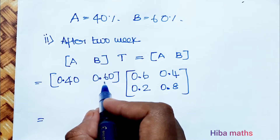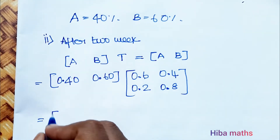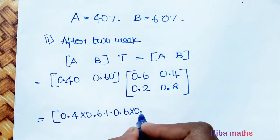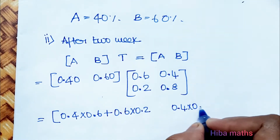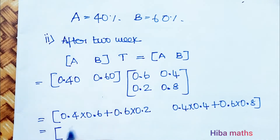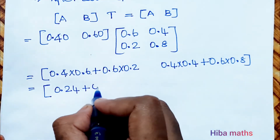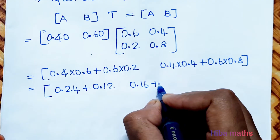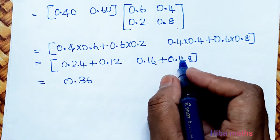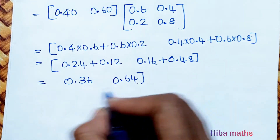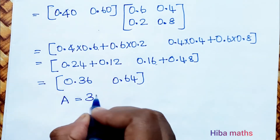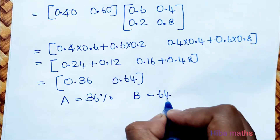Calculating: 0.4 × 0.6 = 0.24, plus 0.6 × 0.2 = 0.12, giving 0.36. Second column: 0.4 × 0.4 = 0.16, plus 0.6 × 0.8 = 0.48, giving 0.64. So after two weeks, A = 36% and B = 64%.